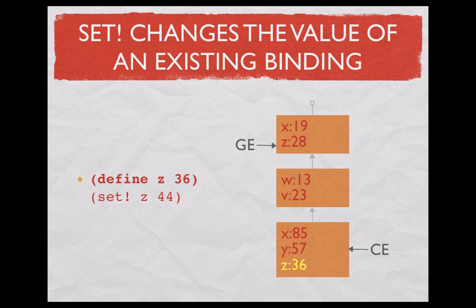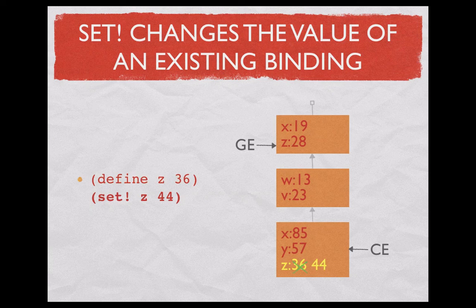And the next thing we do is to change z to 44. This time, the way set is evaluated, we look for the first z we find in the current environment. And that is the z we have in the first frame. That's fine. We change that to 44. And thereby you see the difference between executing these two in different orders. They have different results.